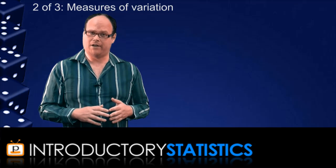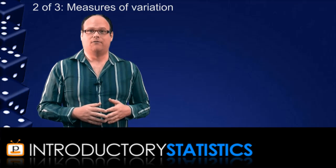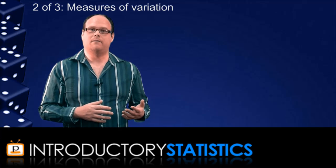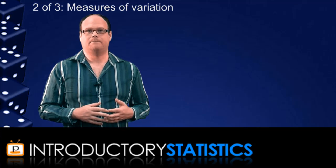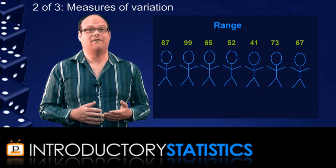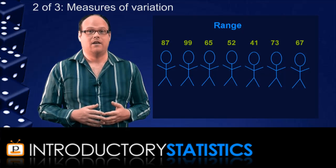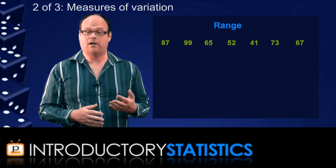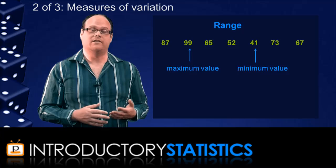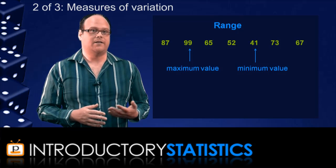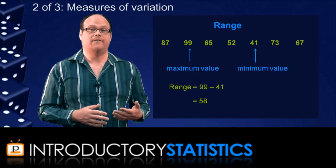The crudest measure of variation is the range. The range is simply the difference between the maximum and minimum value in the data set. For example, let's say we now have a sample of seven test scores. The maximum value is 99 and the minimum value here is 41. So the range is the difference between these two values, which is 58.